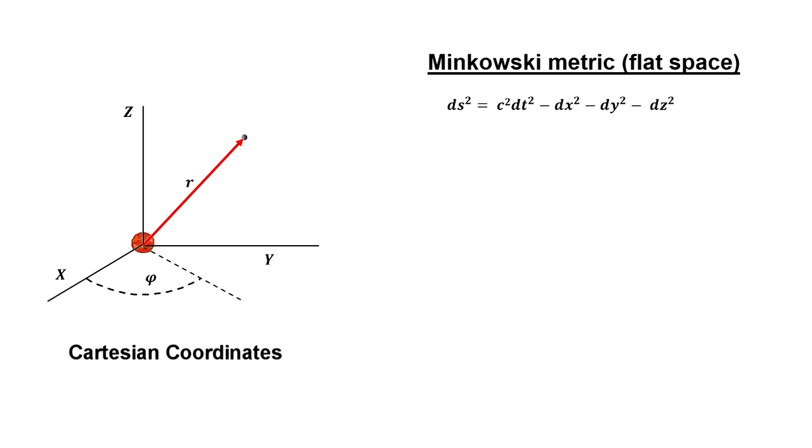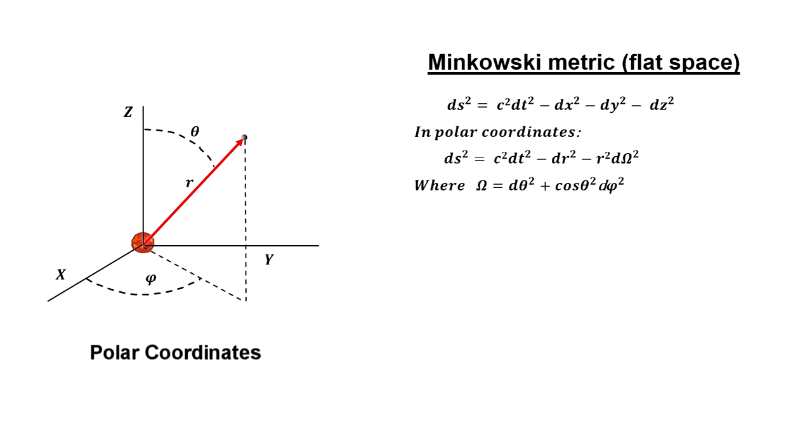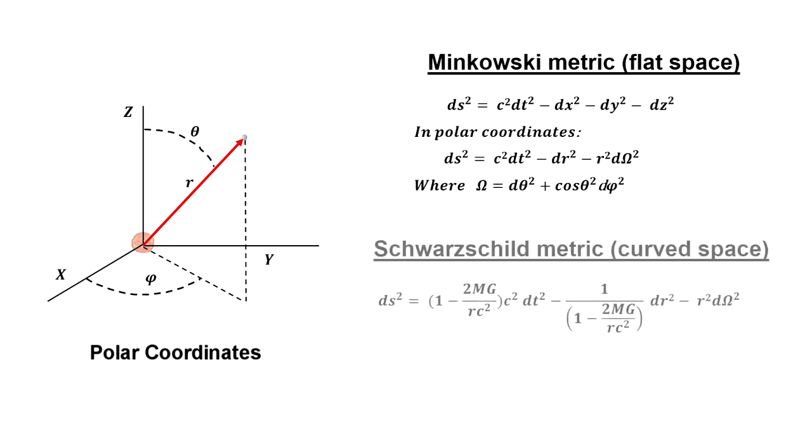His metric is now called the Schwarzschild metric, and it works quite well for slowly rotating masses like the Earth and the Sun and the planets in our solar system. We'll use this metric for the first three tests.